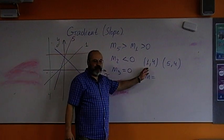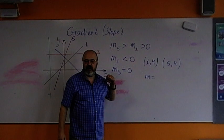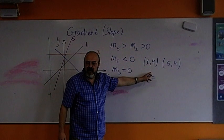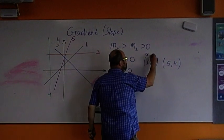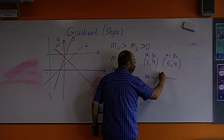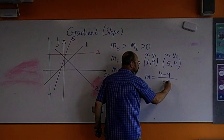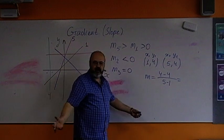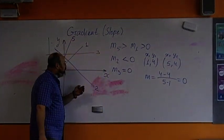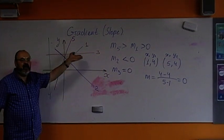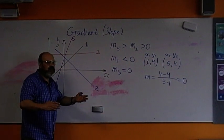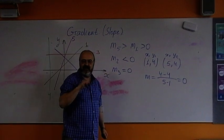Which point will be point one? Which point number two? This will be point number one. Because, why we take this as one? Because x is smaller. So, x1, y1, x2, y2. Equal four minus four divided by five minus one. Four minus four is zero. Zero divided by anything is zero. So, we get the gradient of the line number three equals zero. There is no rise. You're running, but not rising on the same level.